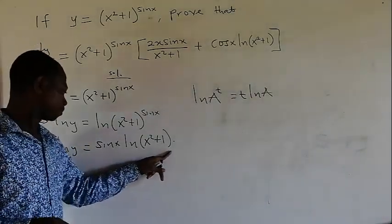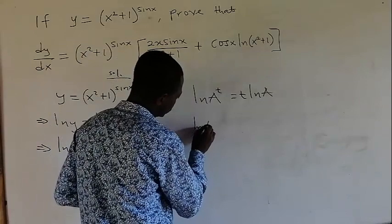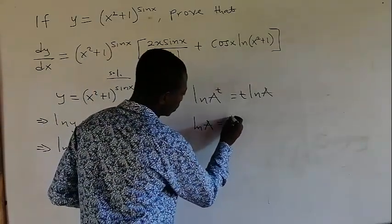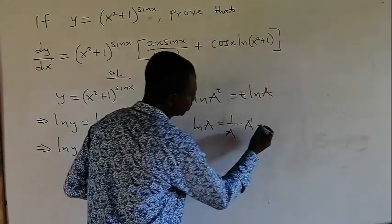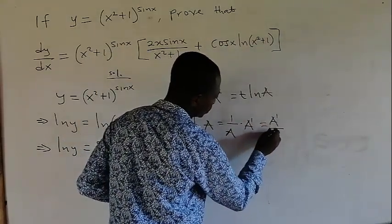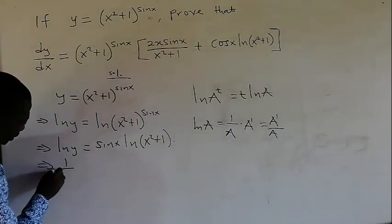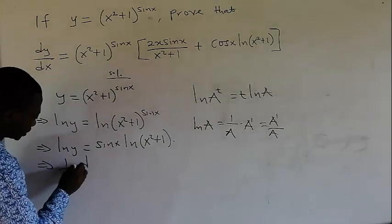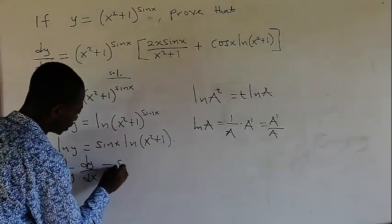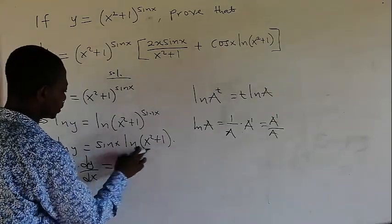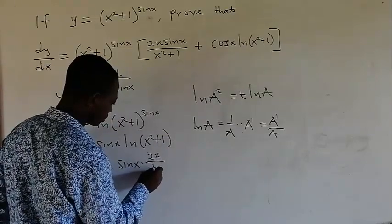So this one is a product on the right-hand side. Now before differentiating, recall that if we have the natural log of a variable A, to differentiate this it is always 1 over A times the derivative of A. So on the left side we get 1 over y times dy/dx. On the right side, applying the product rule: keep sin x, then differentiate ln(x squared plus 1), which gives 2x over x squared plus 1.